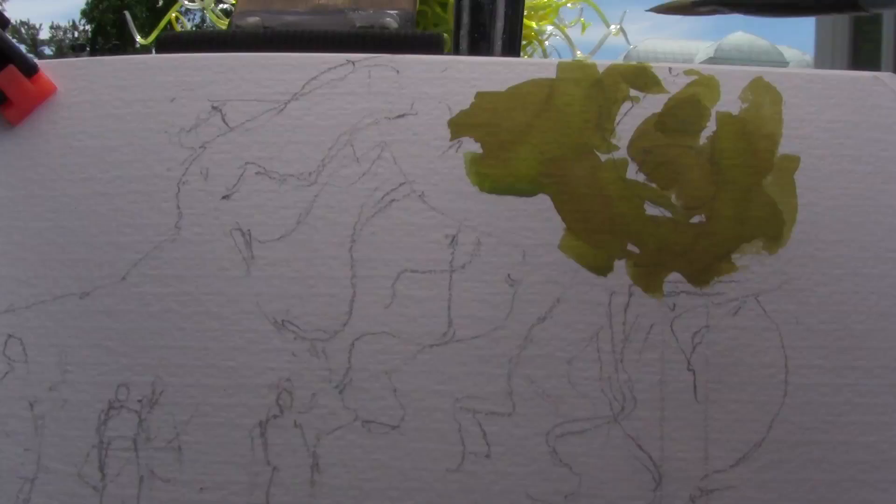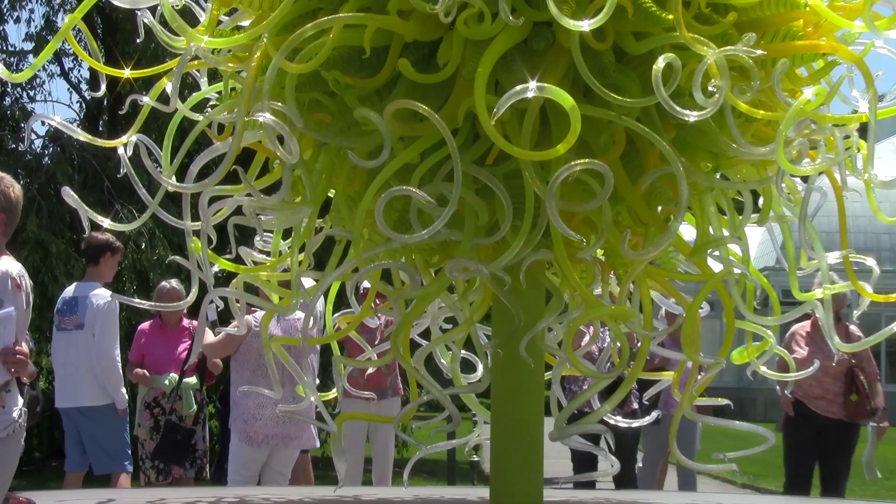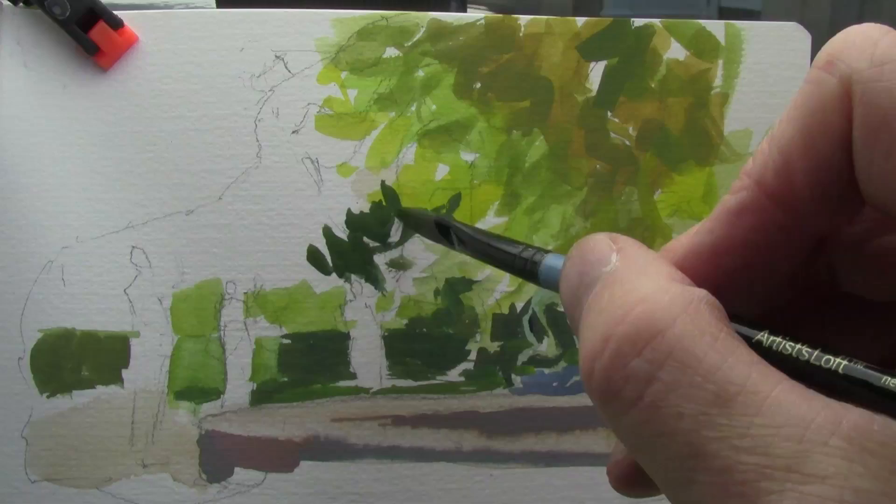The light comes and goes from behind the clouds, which makes the light on the subject change quite a lot. But I'm basically on the shadow side of the glass object. And what I'm trying to think about now is how to get started with all those overlapping forms.